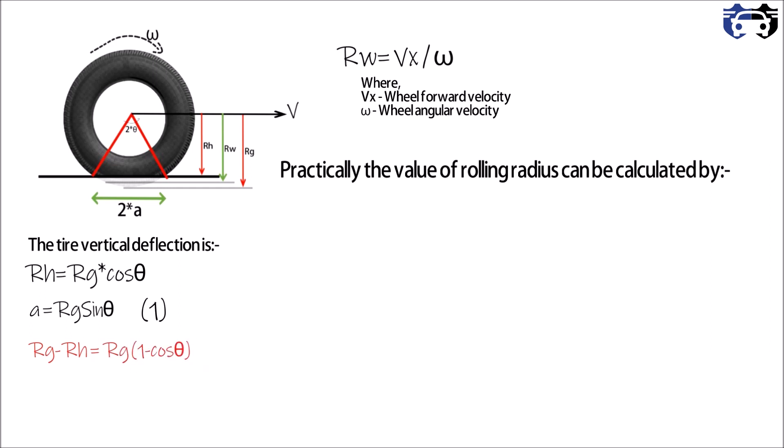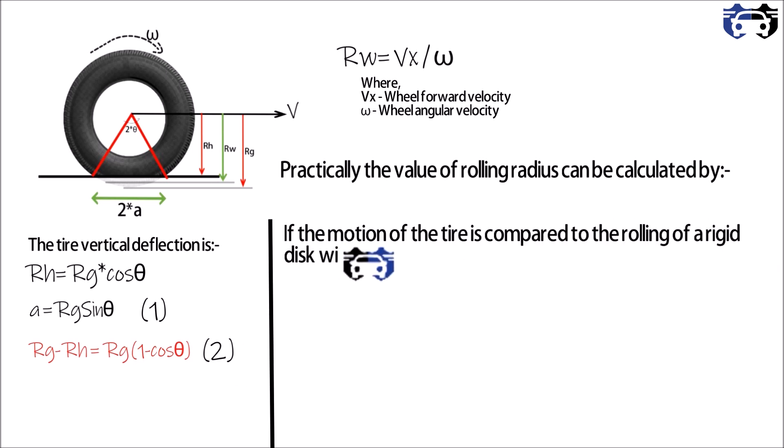Now Rg minus Rh equals to Rg into one minus cos theta. This is our equation two. If the motion of the tire is compared to the rolling of rigid disc with the radius of Rw, that is the rolling radius, then the tire must move a distance a.